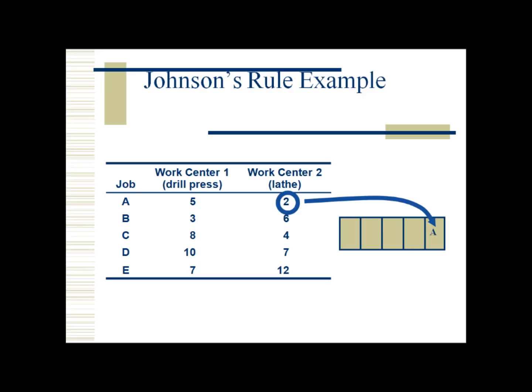The next step is to find again the smallest number in the remaining jobs. Looking again at the table, the number three is the smallest number, and that is job B under machine one or work center one. Since the number three belongs to the first work center, job B should be sequenced first.